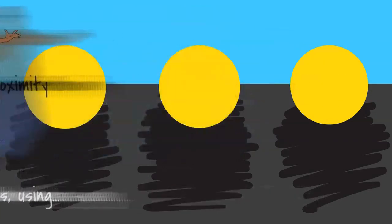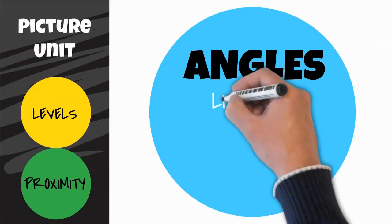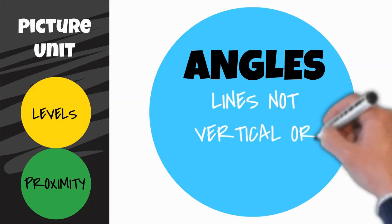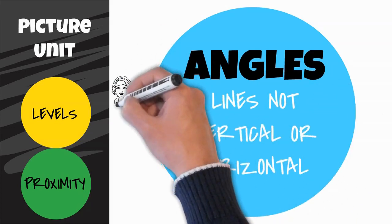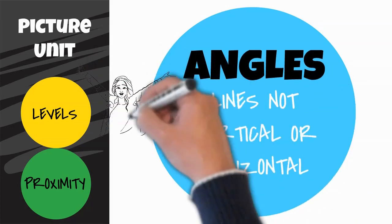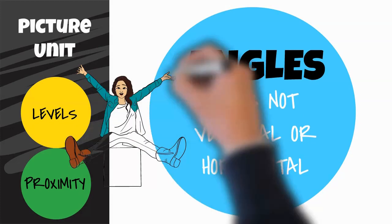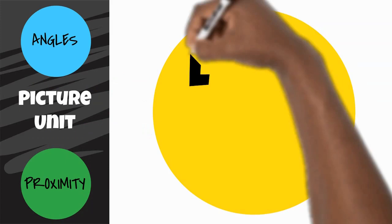Let's begin with angles. Most simply put, angles are any part of the body that is not vertical or horizontal. The most important part is variety — if someone else is at a certain angle, you should be at a different angle to make the stage picture more diverse.